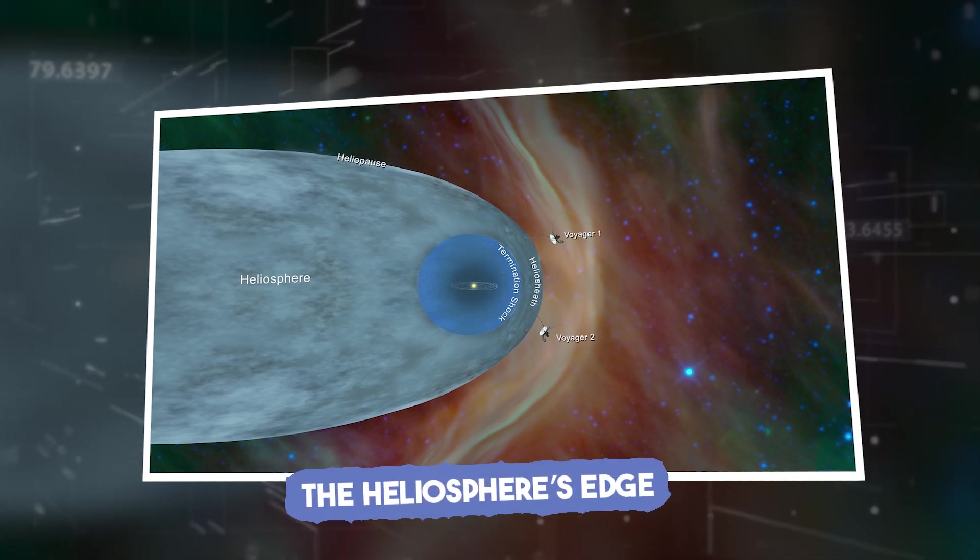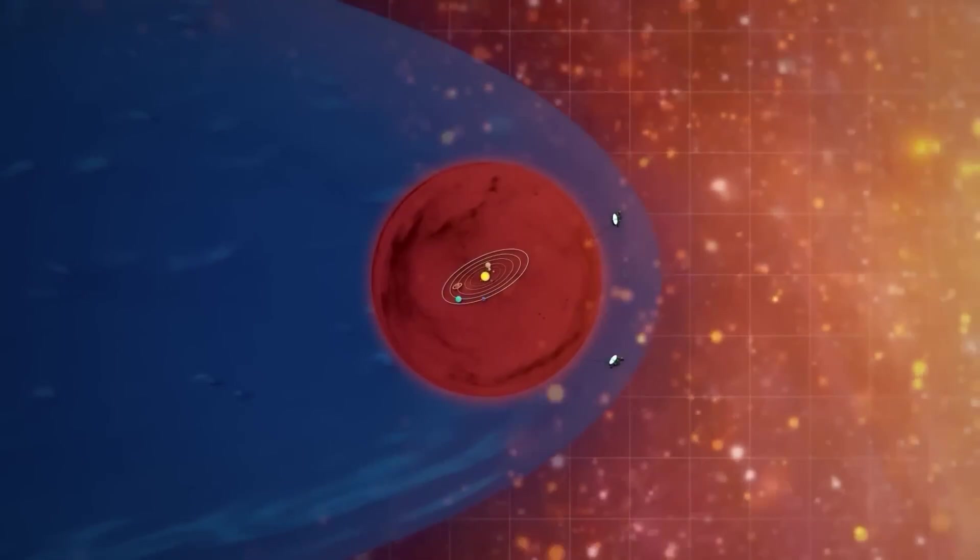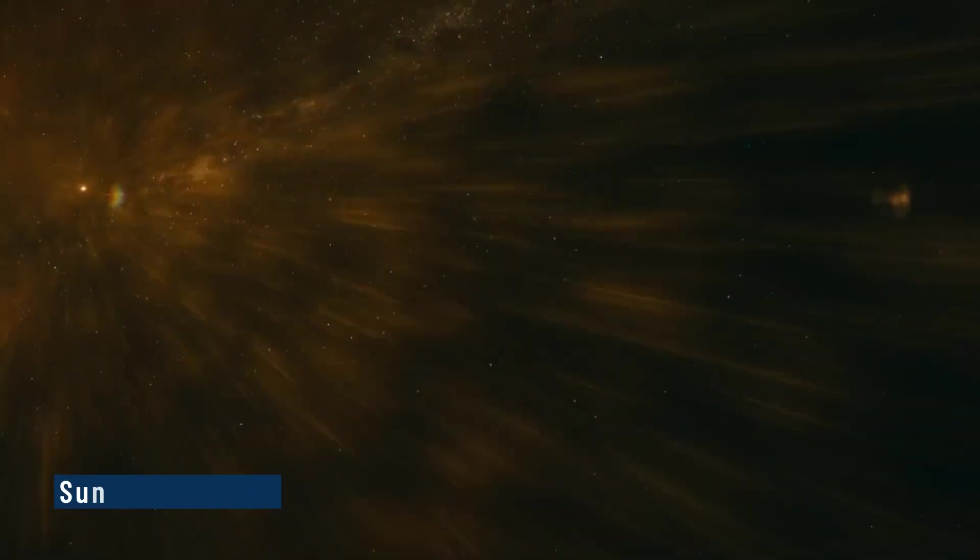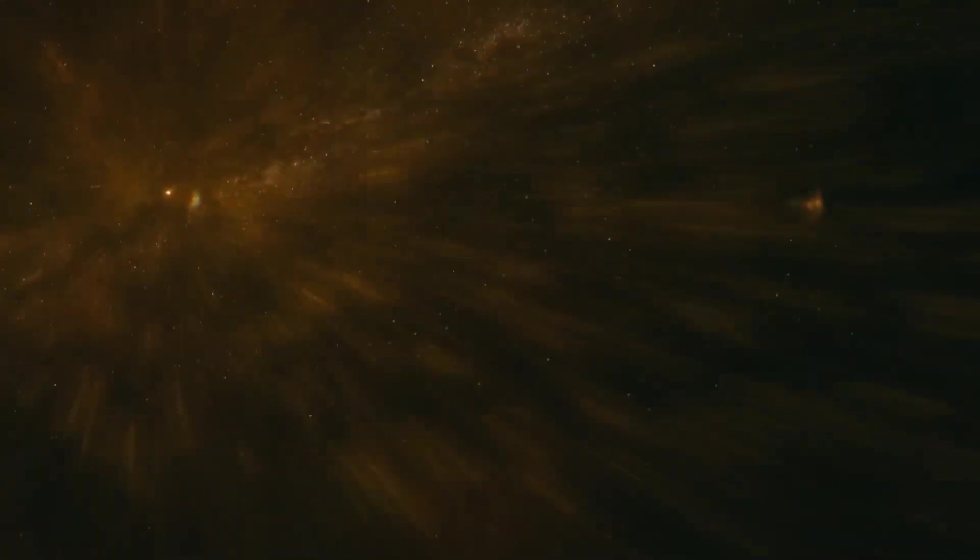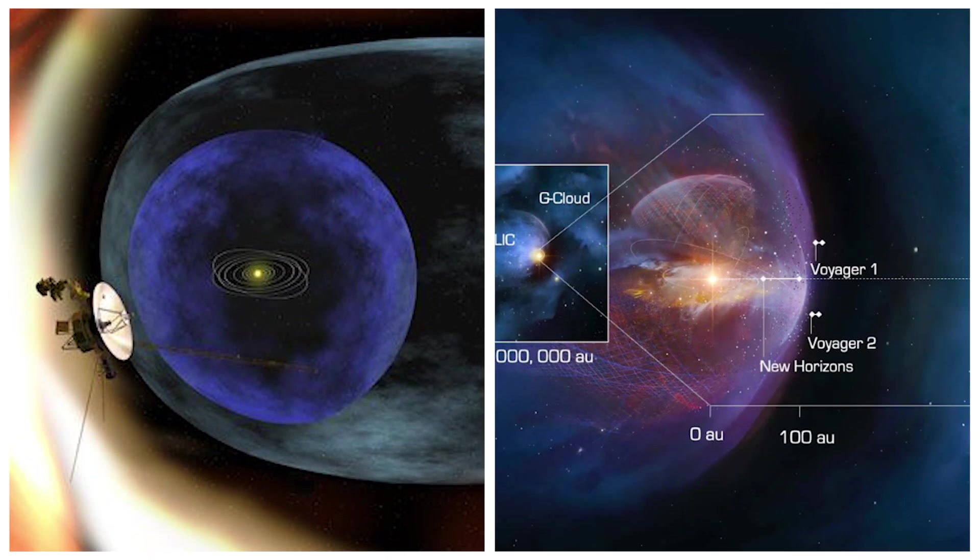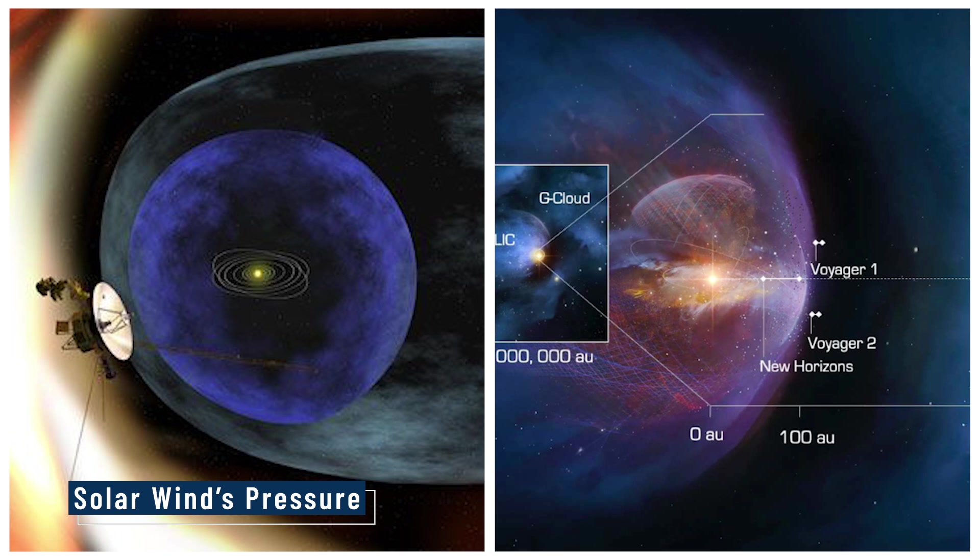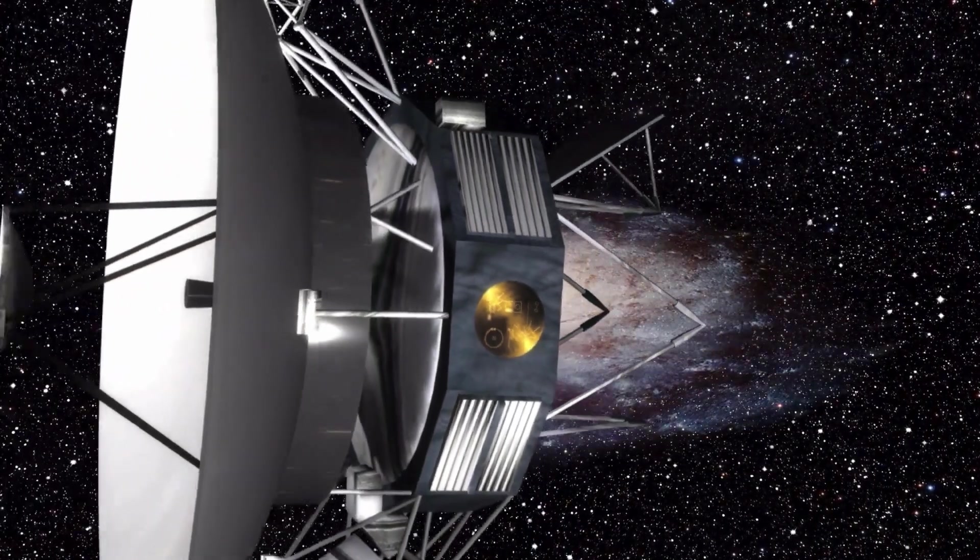The Heliosphere's Edge. The Heliosphere can be imagined as an enormous protective bubble surrounding our solar system, formed by the Sun's solar wind, a constant stream of charged particles flowing outward. This bubble shields planets from harmful cosmic radiation. The outer boundary of this bubble is called the Heliopause, where the solar wind's pressure balances with the interstellar medium, the gas and dust floating between stars.